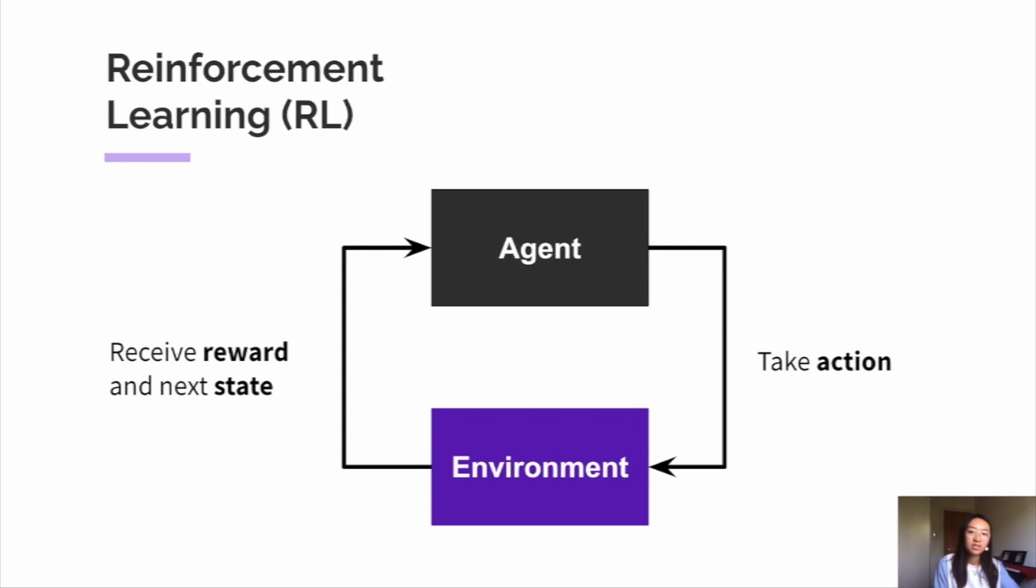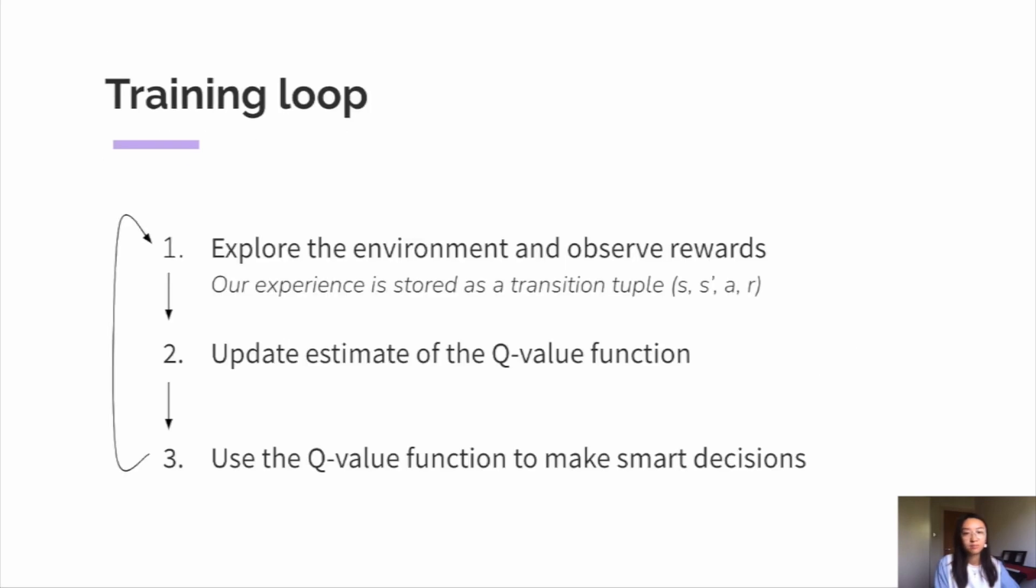Unlike other machine learning techniques, it doesn't need a labeled data set as it learns from experience. The RL training loop looks something similar to this. Firstly, our agent explores the environment and observes the reward it receives. We often store our experience in the form of a transition,